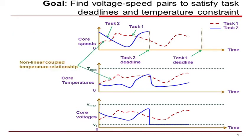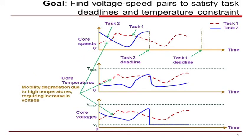The core temperatures have non-linear relationship with the core speeds and are highly coupled with the temperatures of other cores. On the other hand, the core voltages are derived to satisfy the circuit delay constraints, accounting for mobility degradation due to high temperatures.